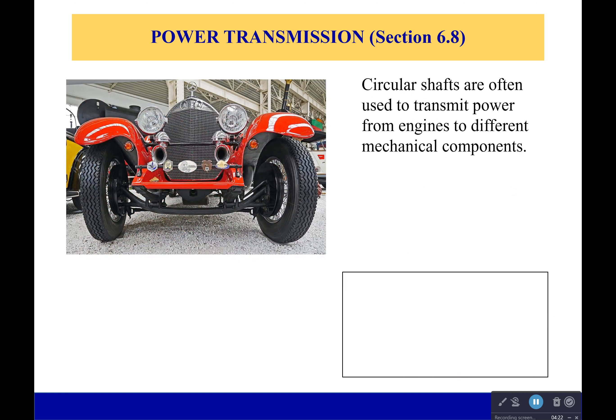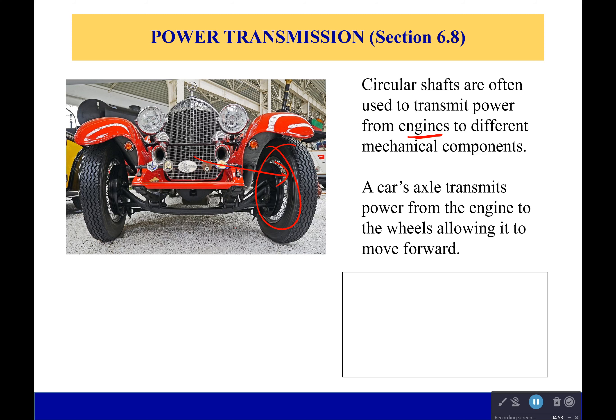Okay so with that let's talk about power transmission. So we know that we can use these two gears to transfer torque and everything else. What about power? Because our circular shafts are often used to do this. It goes from the engine to in this case the wheels. I know this is probably not a front wheel drive car so we go to the back wheels, but forgive me I'm not going to take the time to correct that. So a car's axle will transmit power from the engine to the wheels. If it's a front wheel drive it'll be right here otherwise in the back and it allows it to move forward.